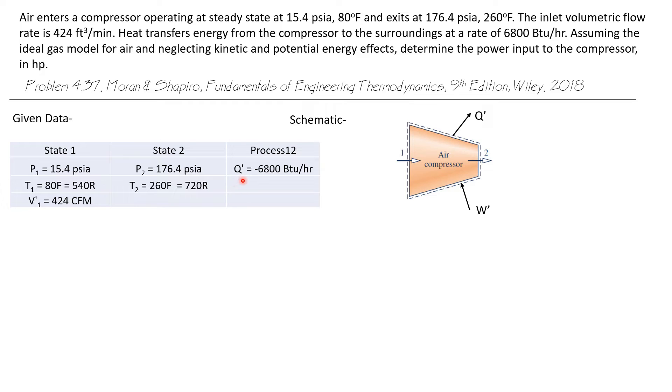We were given that the heat transfer rate was 6,800 BTUs per hour, and we have to make that negative because the flow of energy is from the system to the surroundings. And for heat transfer, that is a negative value.